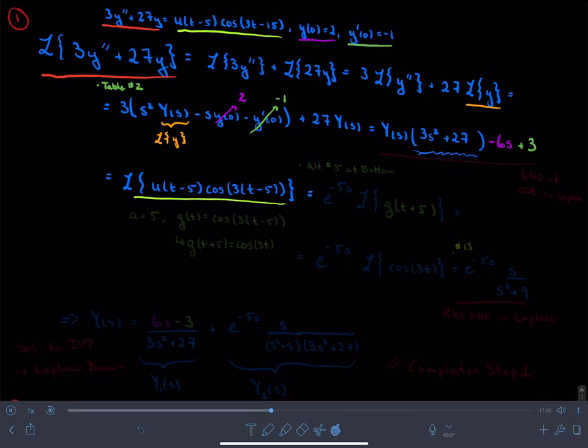But going from t's to s's, the important Laplace transform here is the alternate version of 5. So this is alt number 5 at the bottom.